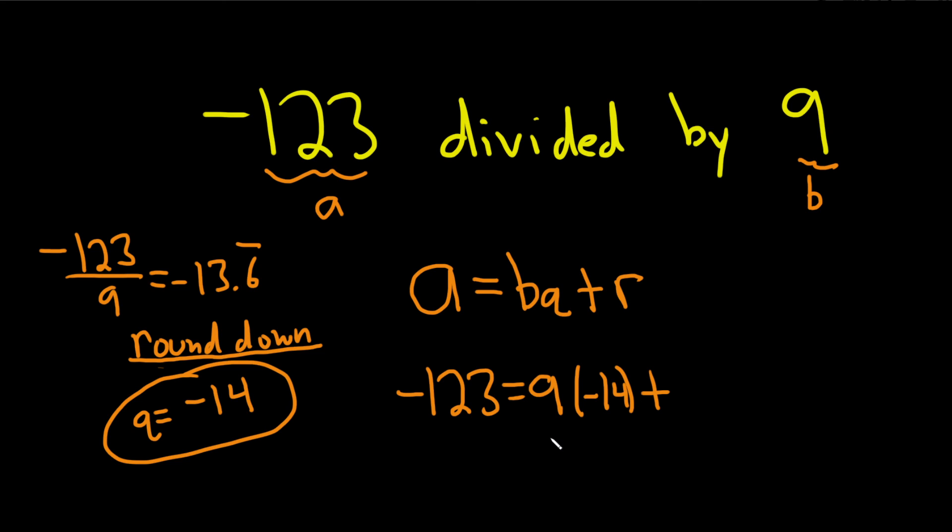The way I like to figure out R is to multiply these in the calculator. 9 times negative 14 gives negative 126. So what do you add to negative 126 to get negative 123?